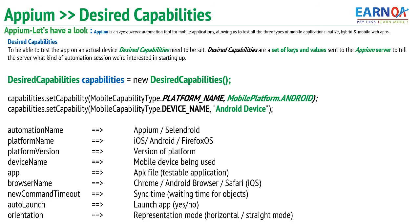Desired capabilities are a set of keys and values. For example, we need to specify the platform — is it Android, iOS, or Firefox OS? Platform is the key and Android is the value. We also need to specify the device — is it a real device or a virtual device? The device name is a key and the Android device is a value.